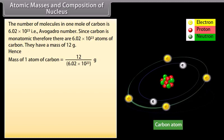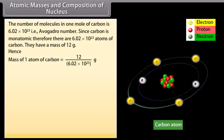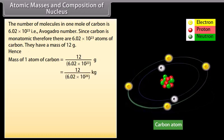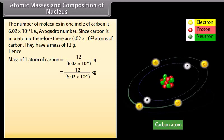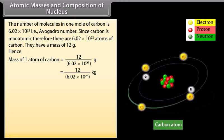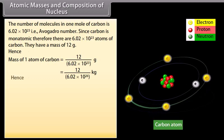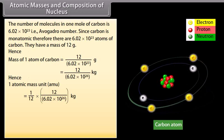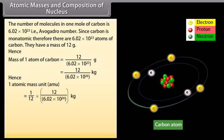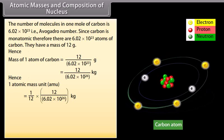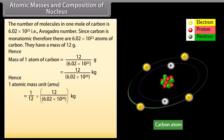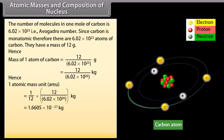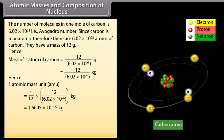Hence, mass of 1 atom of carbon is equal to 12 by 6.02 into 10 raised to the power of 23 grams, which is equal to 12 by 6.02 into 10 raised to the power of 26 kilograms. Hence, 1 atomic mass unit is equal to 1 by 12 into 12 by 6.02 into 10 raised to the power of 26 kilograms, which is equal to 1.6605 into 10 raised to the power minus 27 kilograms.